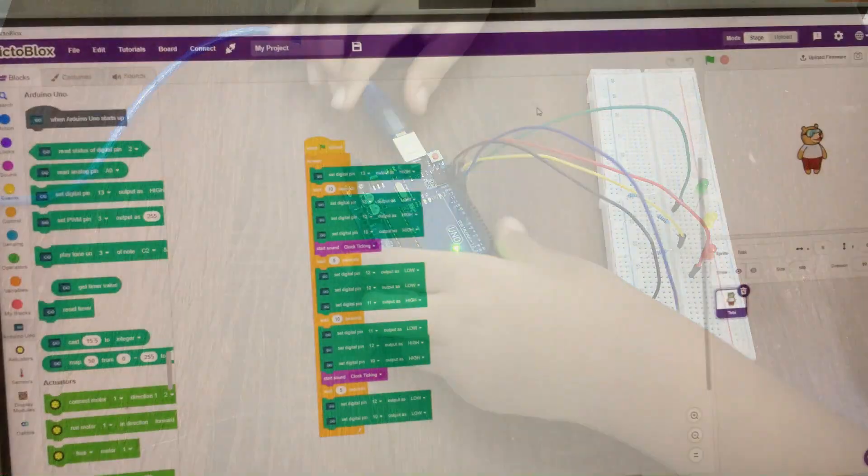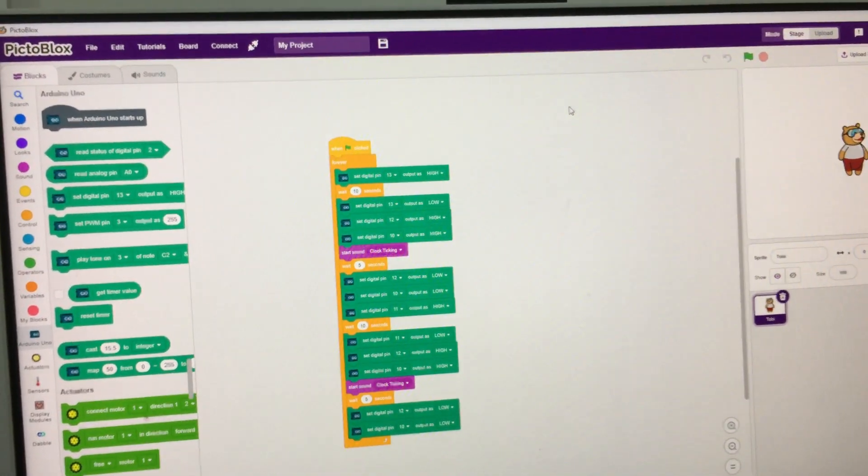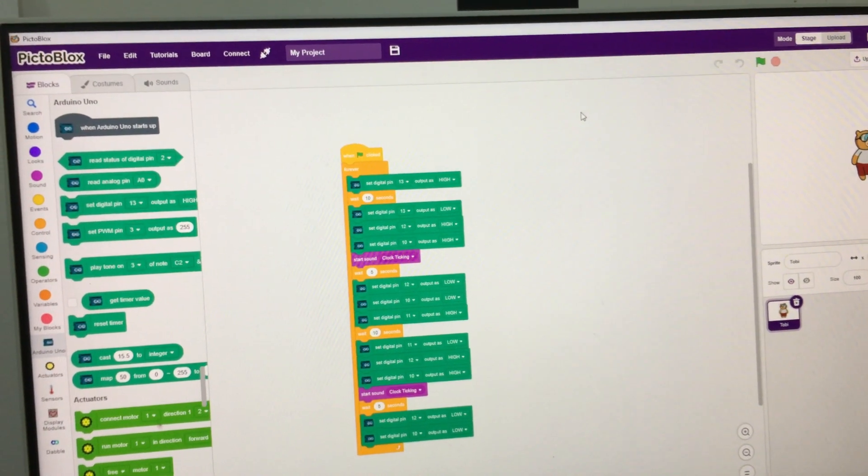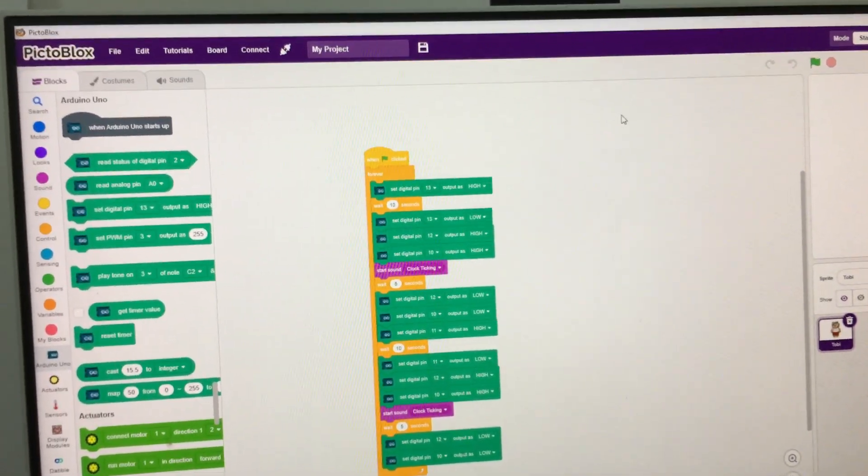I have done programming the traffic light using Pictoblox. Now let me connect the Arduino and see how it works.